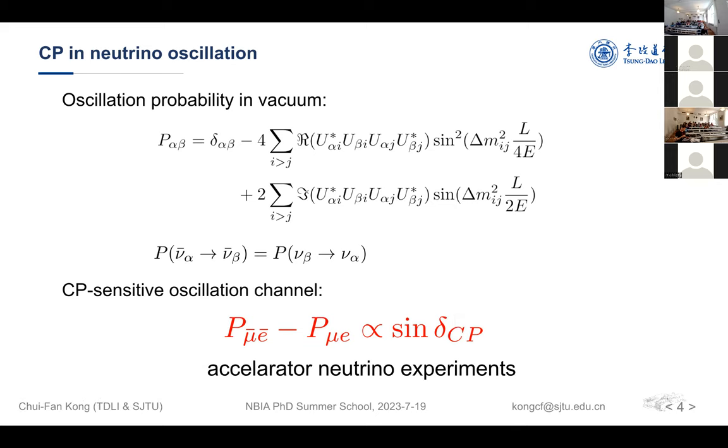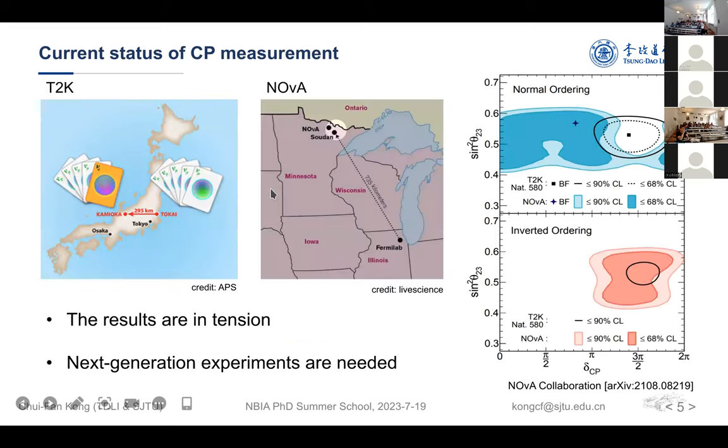We can think that we can use these oscillation channels to constrain such Dirac CP phase. Actually, this is how the experiments do. We need accelerator neutrino experiments to detect such Dirac CP phase. Currently, there are two running experiments. One is called T2K in Japan, and another one is called NOvA in US.